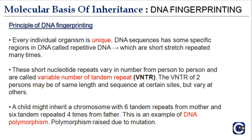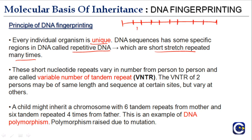The principle of DNA fingerprinting is that every individual organism is unique. DNA sequences have some specific regions called repetitive DNA, which are short stretches repeated many times. For example, a six-nucleotide sequence can be repeated multiple times on the DNA. These short nucleotide repeats vary in number from person to person and are therefore called Variable Number of Tandem Repeats — VNTR. You must remember this term.